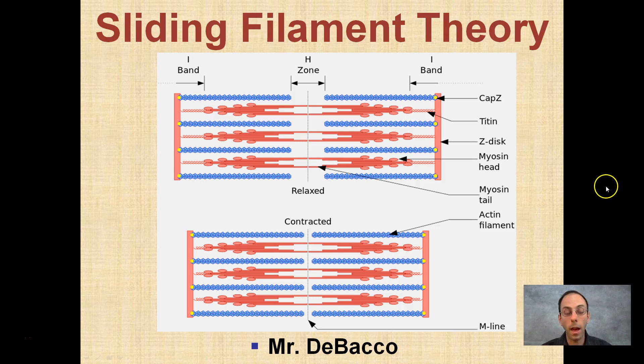Those filaments — actin and myosin — are themselves not shortening in any way; they're just sliding against one another.